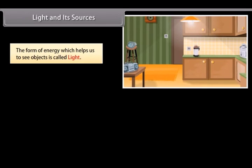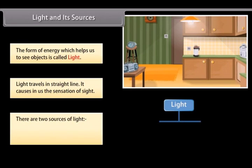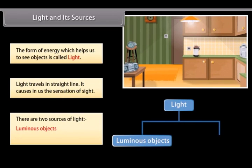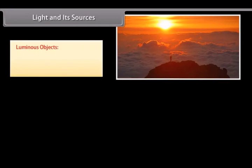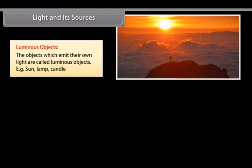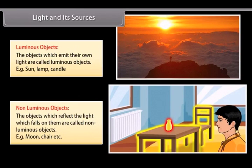Light and its sources. The form of energy which helps us to see objects is called light. Light travels in straight lines and causes in us the sensation of sight. There are two sources of light: luminous objects and non-luminous objects. Luminous objects emit their own light, like the sun, lamp, or candle. Non-luminous objects reflect the light which falls on them, like the moon or a chair.